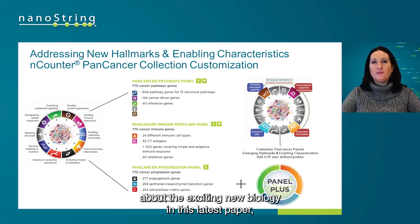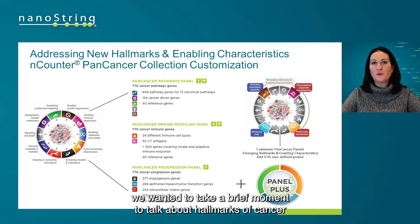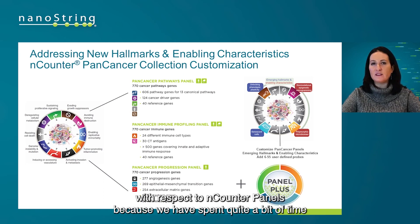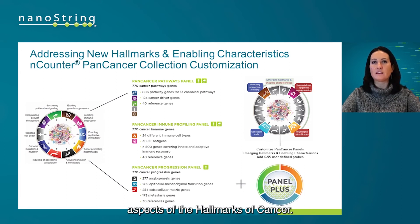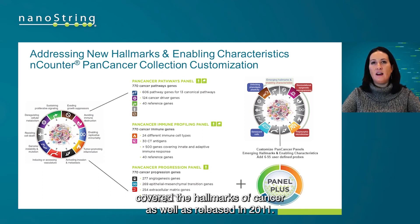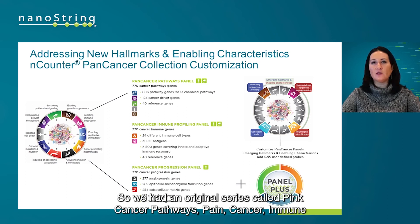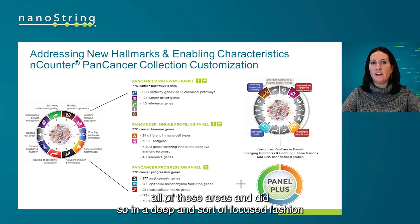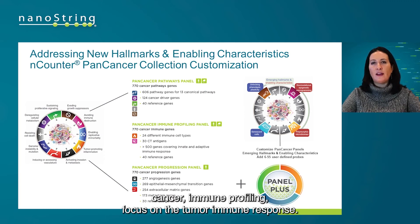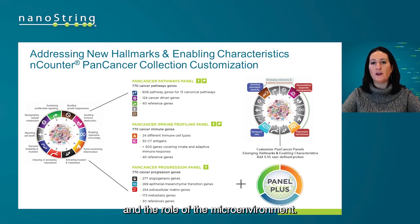We wanted to take a brief moment to talk about the hallmarks of cancer with respect to NanoString panels, as we have spent quite a bit of time highlighting how our panels cover different aspects of the hallmarks of cancer. Our original panels covered the hallmarks as released in 2011 — Pan Cancer Pathways, Pan Cancer Immune Profiling, and Pan Cancer Progression — collectively covering all of these areas. Pan Cancer Pathways focused primarily on the tumor, Pan Cancer Immune Profiling focused on the tumor immune response, and Progression looked at metastasis and the role of the microenvironment.